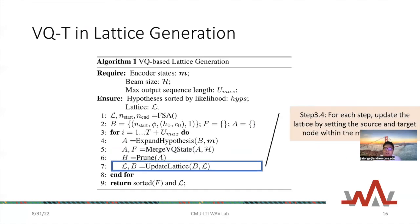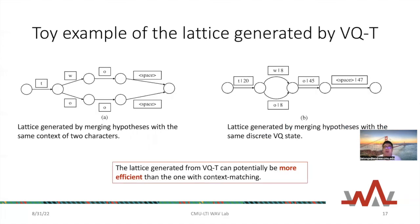For each internal alignment step, we update the lattice by setting the source and target nodes with the merging process. After that, we obtain the output and perform the final prediction. Here is a toy example of the lattice generated by the VQ transducer.